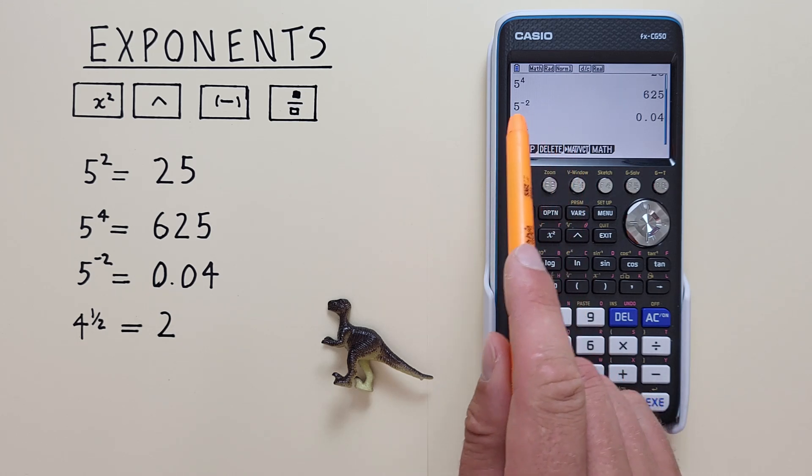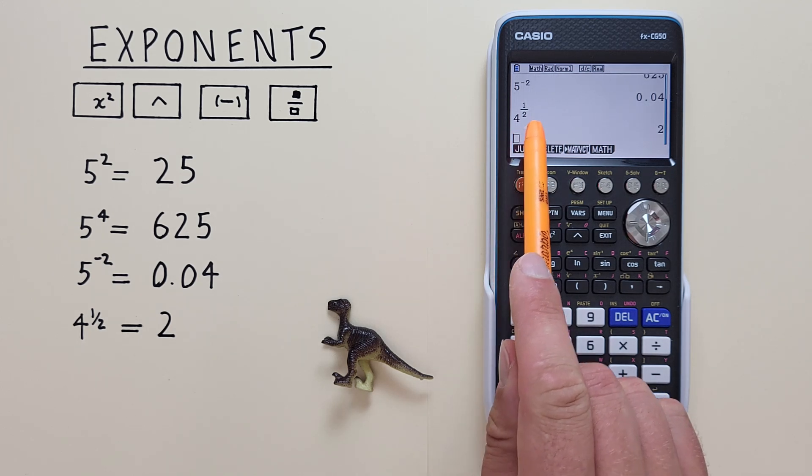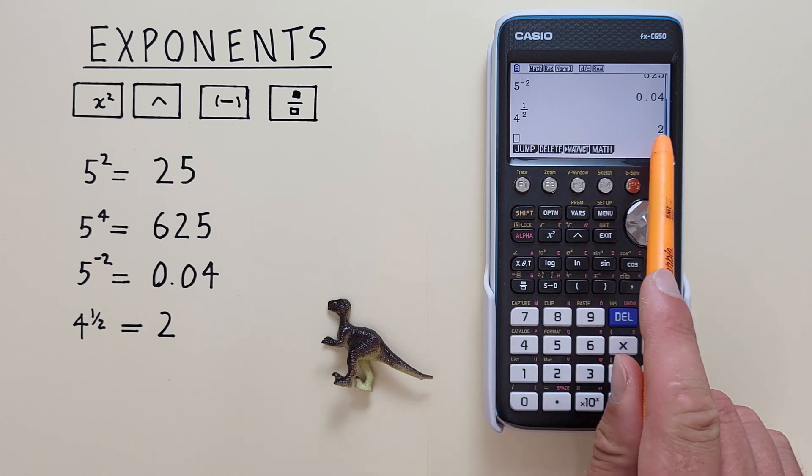That gives us a fraction with two open boxes, so we'll put 1 in the top, scroll down, 2 in the bottom, so we have 1 over 2, and then we hit exe, and we see we get 4 to the power of 1 over 2 is equal to 2.